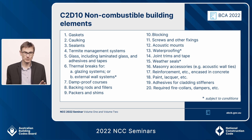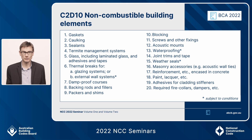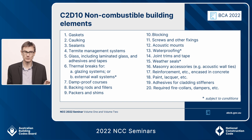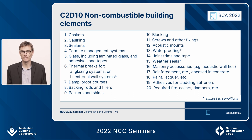That list has now grown to 21 items. From 6B onwards — which is a new external wall system thermal break concession — these are all new concessions included in C2D10. Thermal breaks for glazing systems currently receive a concession, but from 6B onwards everything is new.